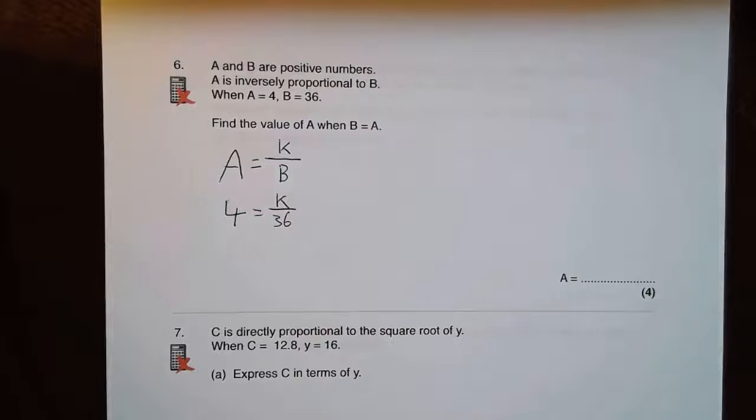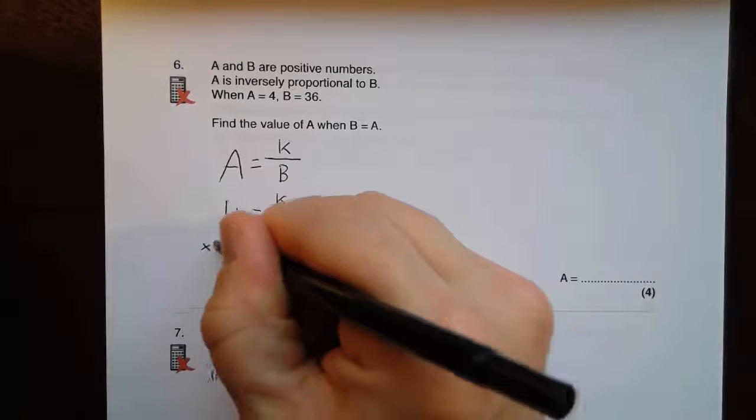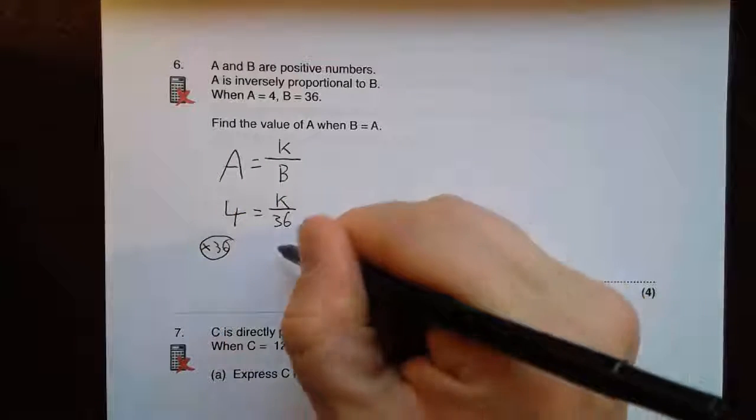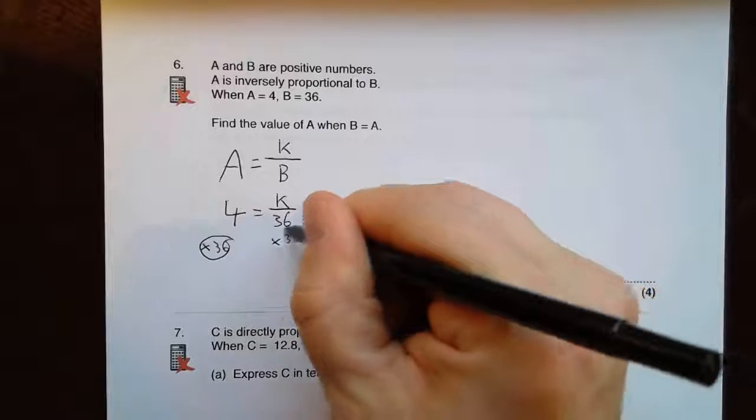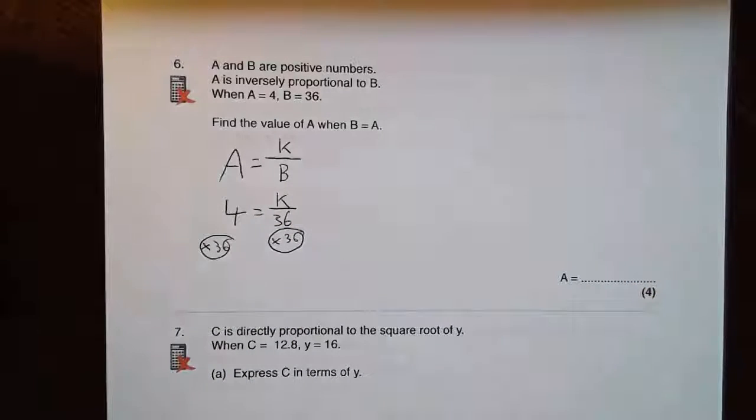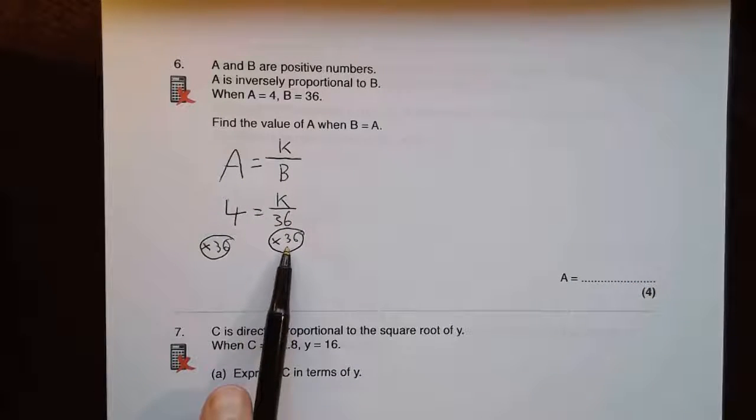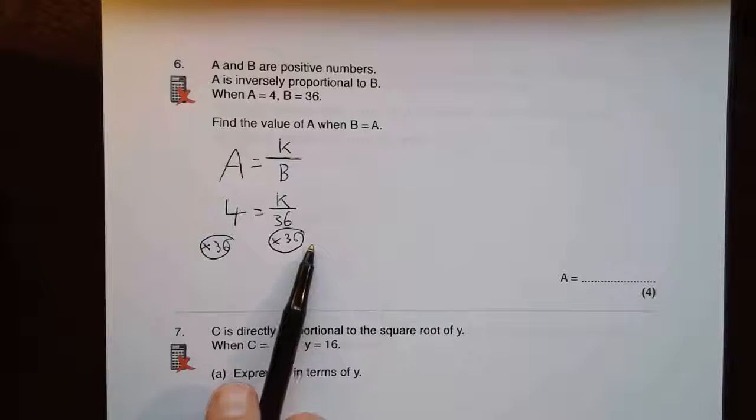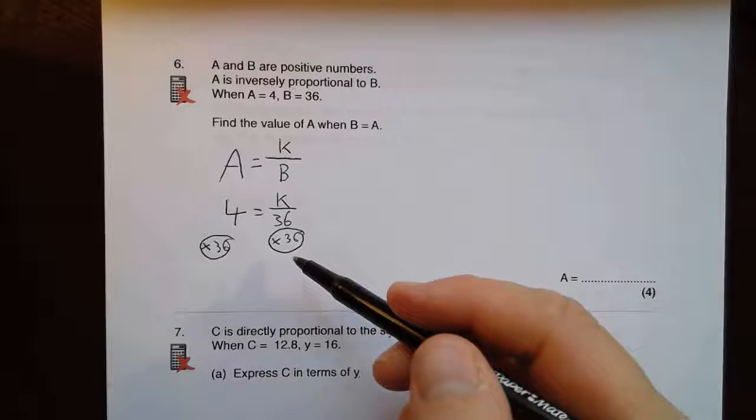I've got to work out what k is. So I'm going to times both sides by 36. Times by 36. So 4 times by 30 would give me 120. 4 times by 6 gives me 24. So 154.